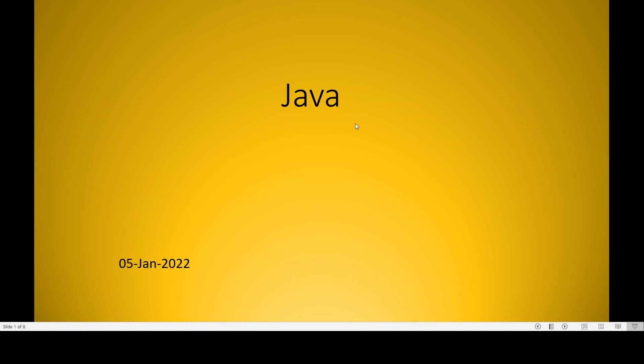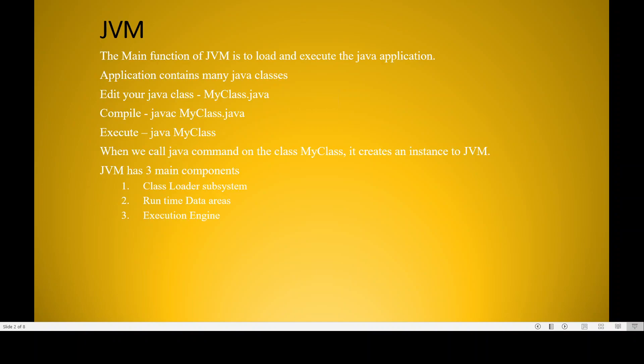Hello, welcome to my channel. In this video I will be explaining the architecture of JVM, that is the Java Virtual Machine. A Java application contains many Java class files. To compile a class like MyClass.java, we use the command 'javac MyClass.java', which generates a dot class file containing the bytecode for your Java source code.